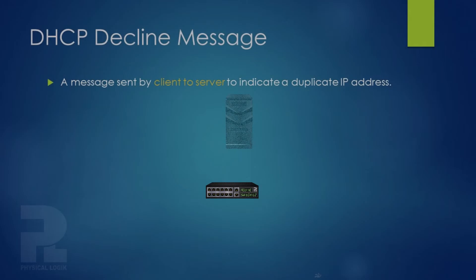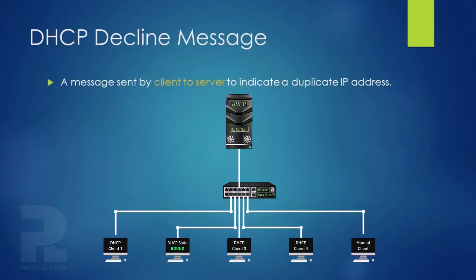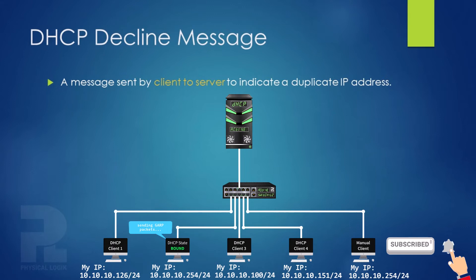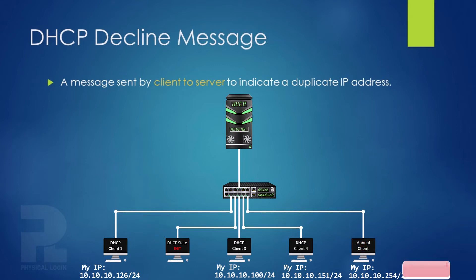DHCP Decline: After a host has obtained IP configuration from a DHCP server, it'll attempt to verify the uniqueness of this IP address using the Address Resolution Protocol mechanism before putting it to use. In the event that an IP conflict is detected, the DHCP client sends a DHCP Decline message to the server and then applies for another IP configuration.